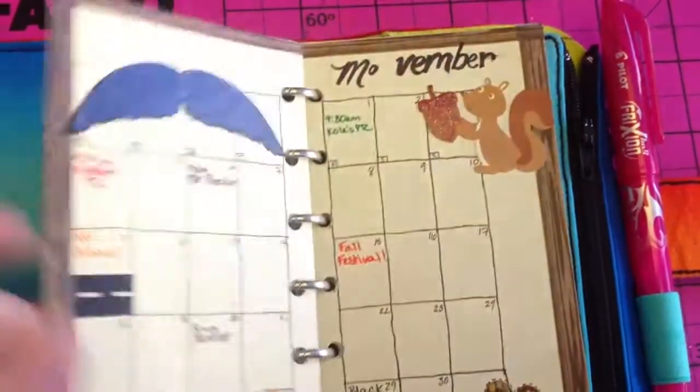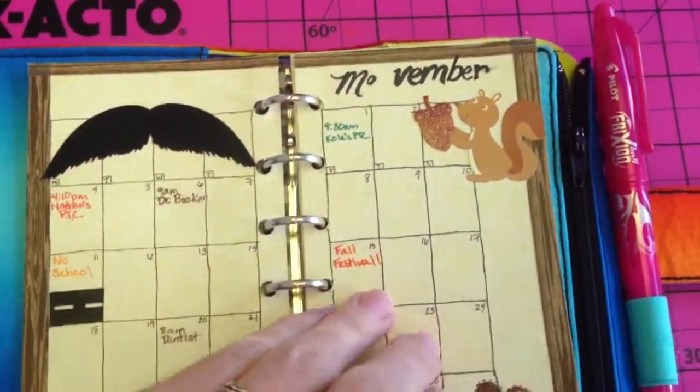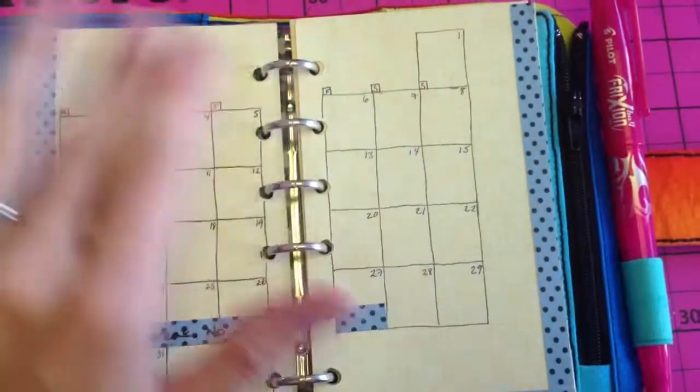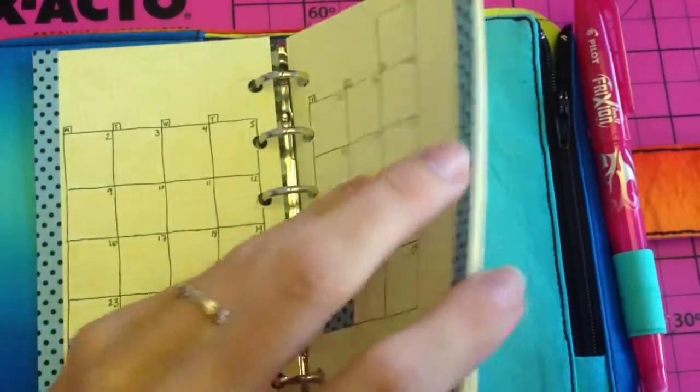I just printed on some card stock. I printed the grids. Just a little tiny 0.1 inch grids using Excel. And my calendar for December. I'm not done decorating that. And then just a bunch more pages that I'll be doing things with.